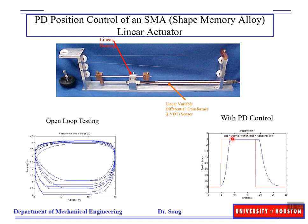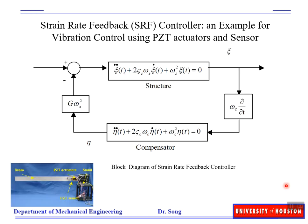No matter whether this is a heating process or a cooling process, with the feedback control we can now follow the desired position very precisely, even though there is a little bit of delay. At steady state, the result is actually very accurate. This is just one example to show that by using feedback, we can achieve much better results.